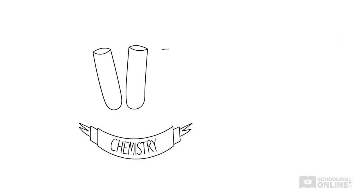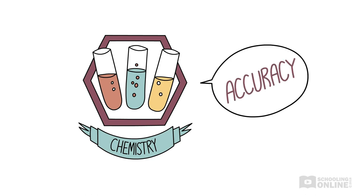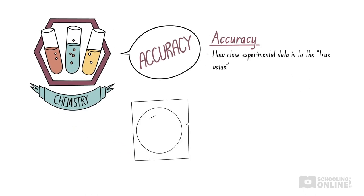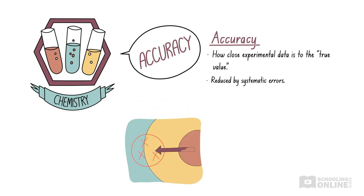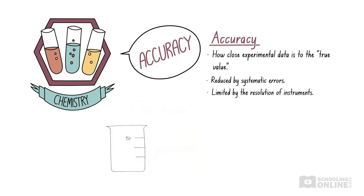Let's revise what we've discussed in this video. Accuracy is a measure of how close the experimental results are to the true value. Accuracy can be reduced by systematic errors. Accuracy is also limited by the resolution of instruments, which depends on the increments of your measuring device.